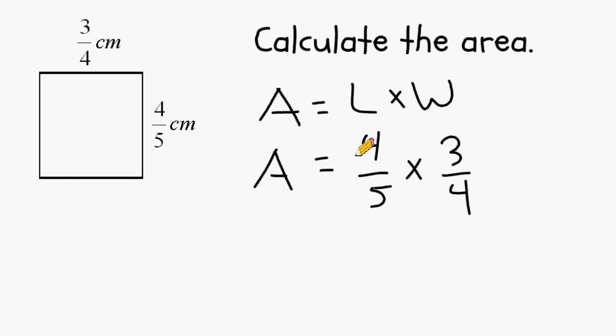Because we have a 4 on the top and the bottom, we may cancel both of those out and change those both into 1's. Next we can multiply 1 times 3, which produces 3. And for the denominator, we have 5 times 1, and that produces 5. So the area of the shown rectangle is 3 fifths of a square centimeter.